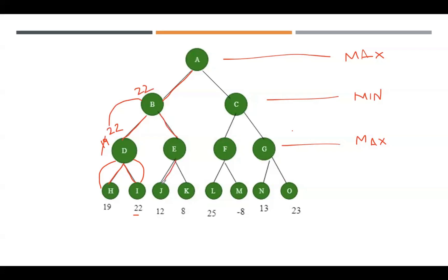Again, move to the left child, which is J with value 12. 12 is sent back to E. After that, traverse towards the right side of E. Here we have K which has value 8. That value 8 is sent back to E. Since E considers the maximum value, maximum among 12 and 8 is 12, so 12 is retained at this place.